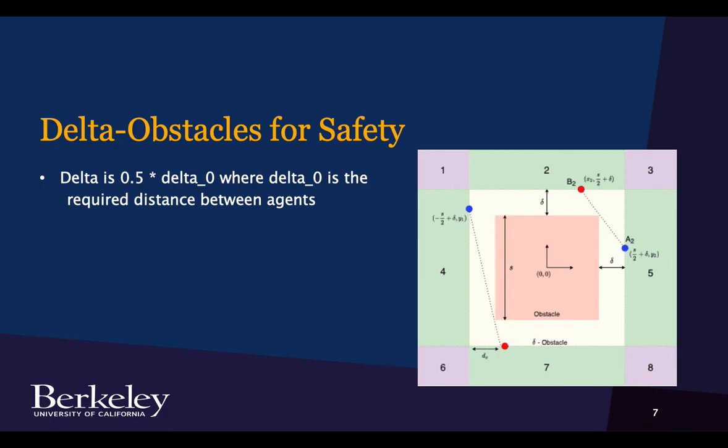And so if they have a defined inter-agent constraint, so long as we define the delta obstacle to be half of that inter-agent constraint, we'll remain safe even if they can't see each other.